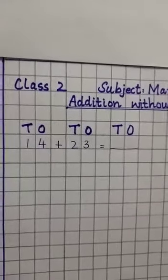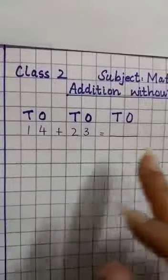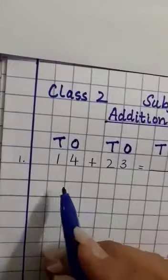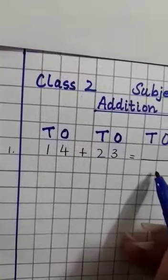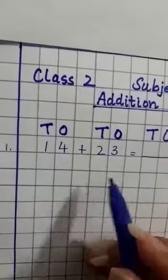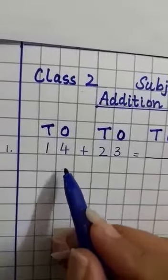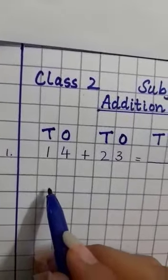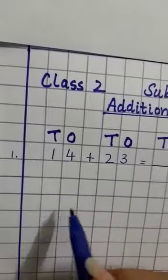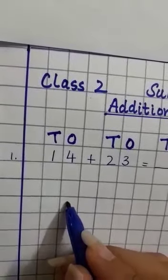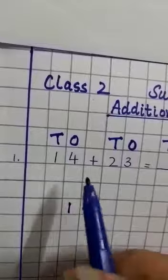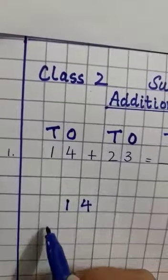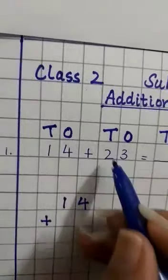Then we will arrange this horizontal sum into vertical form. Leave two lines after writing this—one, two—and two lines from the margin line—one, two. Now first, 14, this is the first number. Then plus sign, 23.